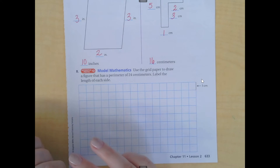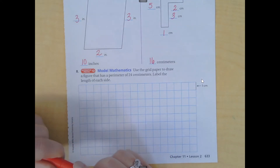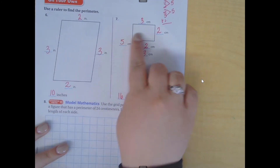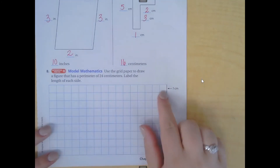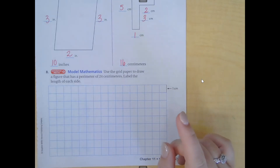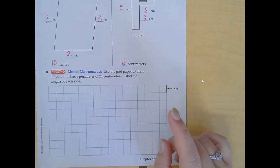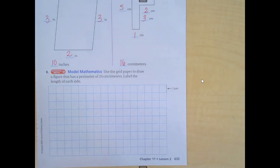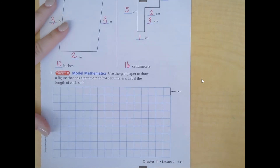Use the grid paper to draw a figure that has a perimeter of twenty-four centimeters and label the length of each side. You can be creative with this — let me get a thicker marker so you can see. Your figure can be oddly shaped or a perfect triangle, it doesn't matter — you just want it to total twenty-four centimeters. Each of these little grid squares is one centimeter. I could think about what adds up to twenty-four, or I could just start drawing.